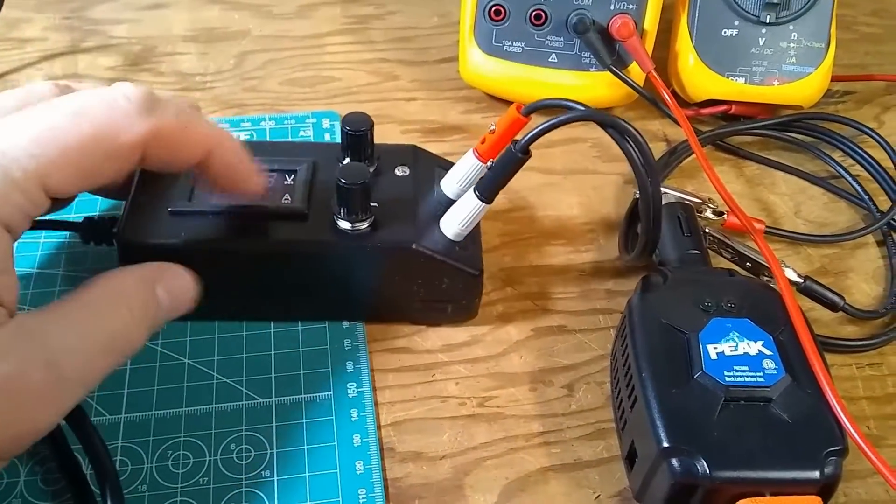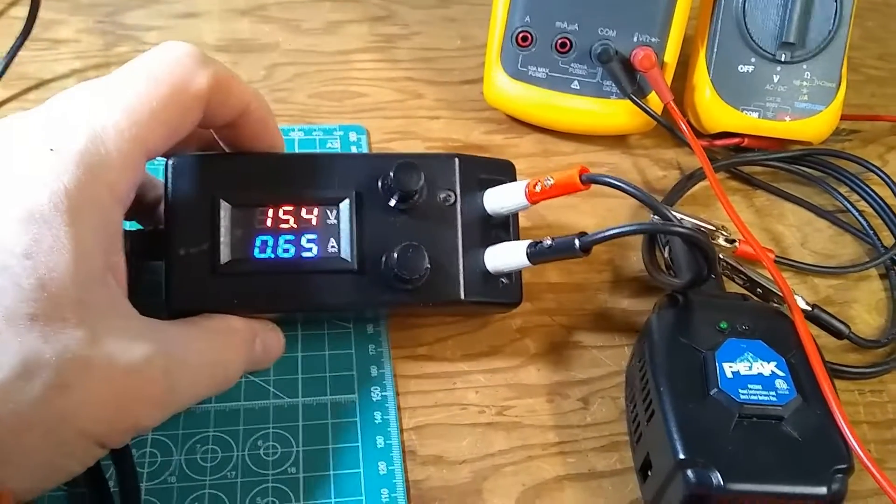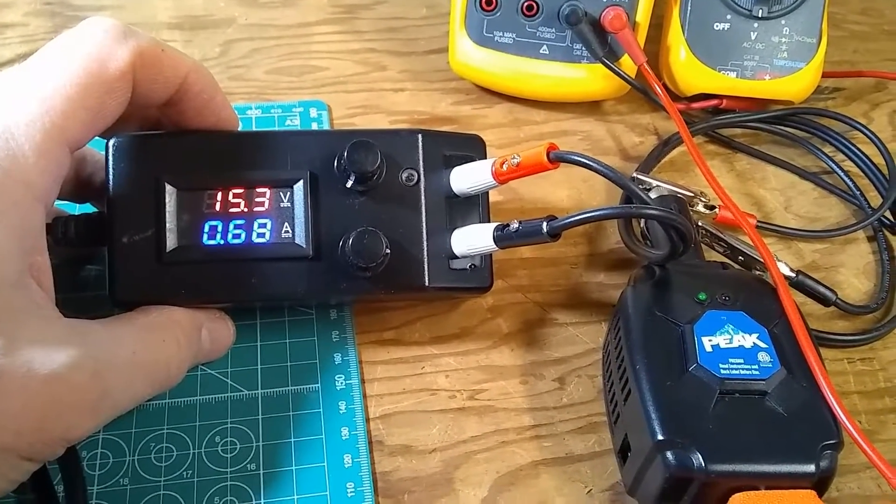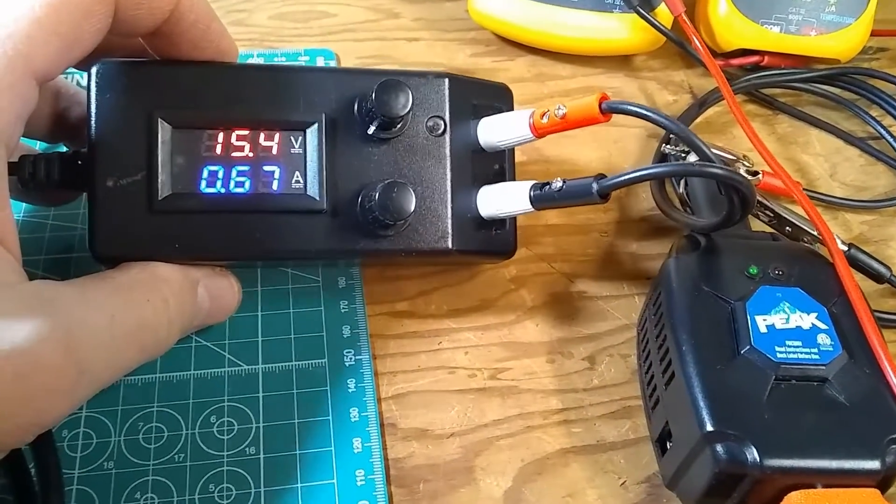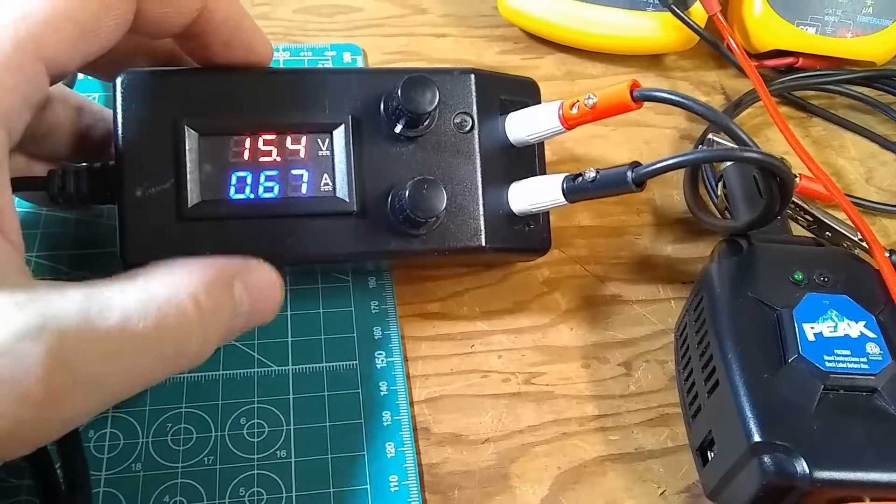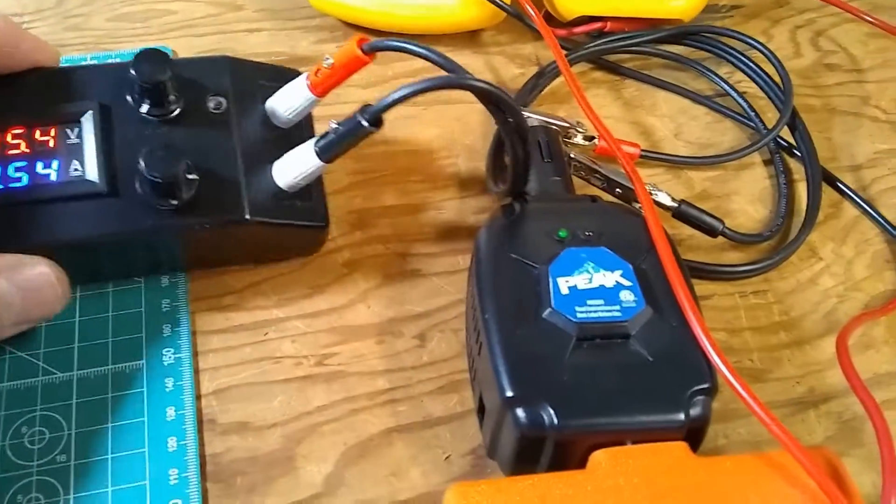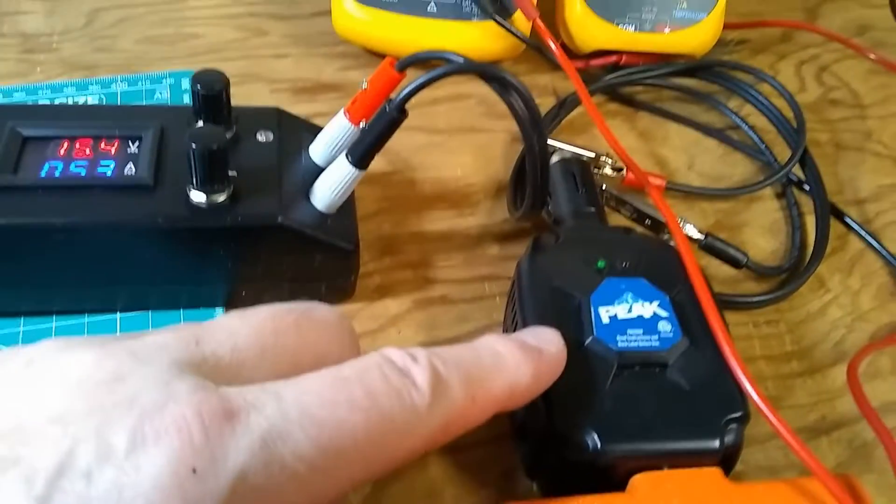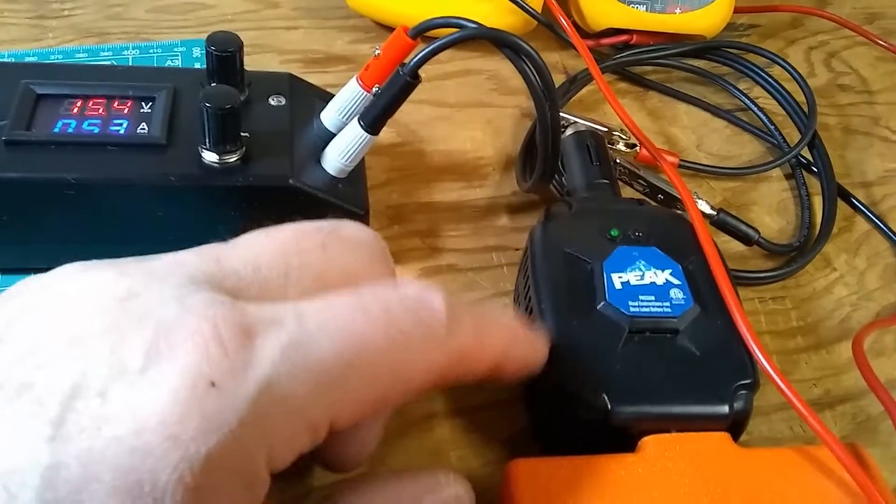As soon as I turn it on, I started with higher voltage—15.3V. The power consumption is 0.67 amps on the output, and the little fan that cools the electronics kicked in. This thing will be going on and off; it's actually a compromise between the size and the power.